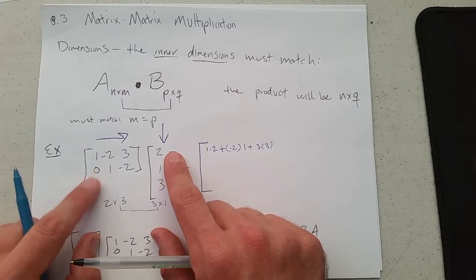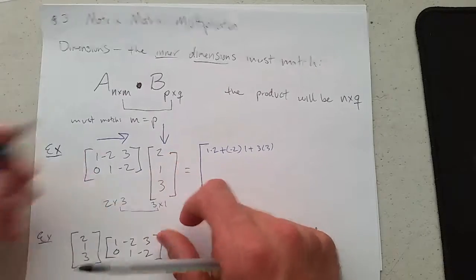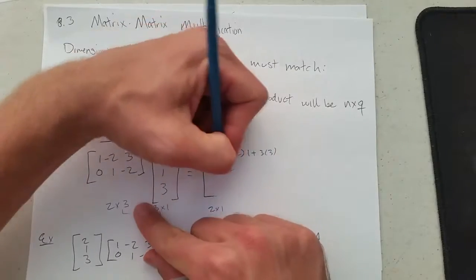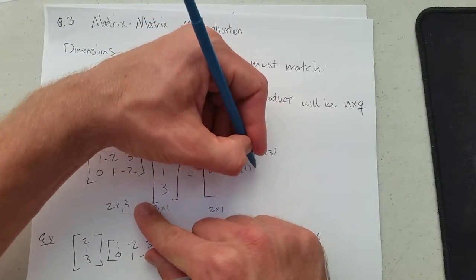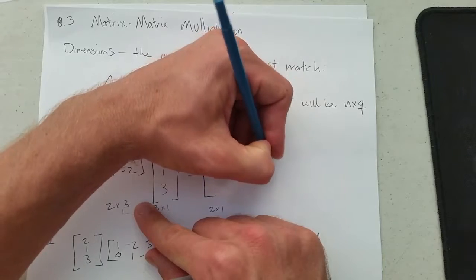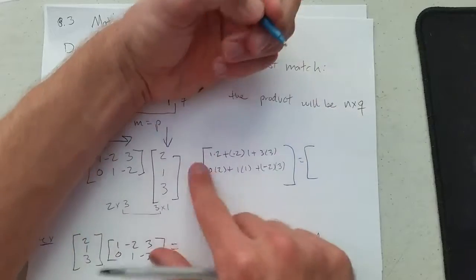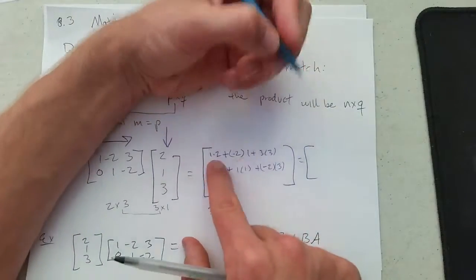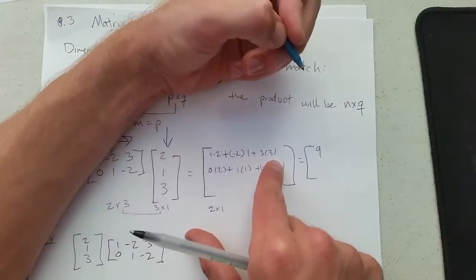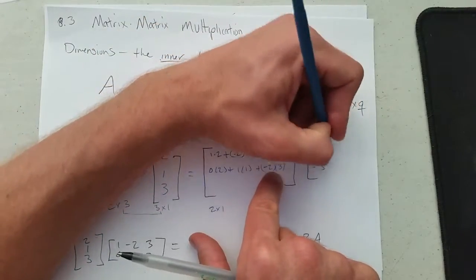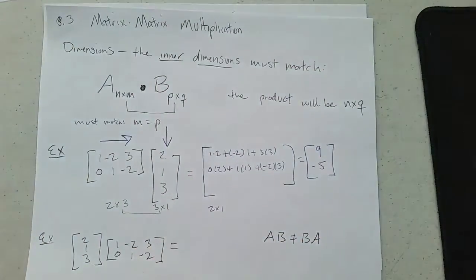We're going to do the same thing on the other row. Zero times two, plus one times one, plus negative two times three. Then we multiply and add all these up. Two minus two is zero, plus nine equals nine. Zero plus one minus six is negative five. So we have nine, negative five.